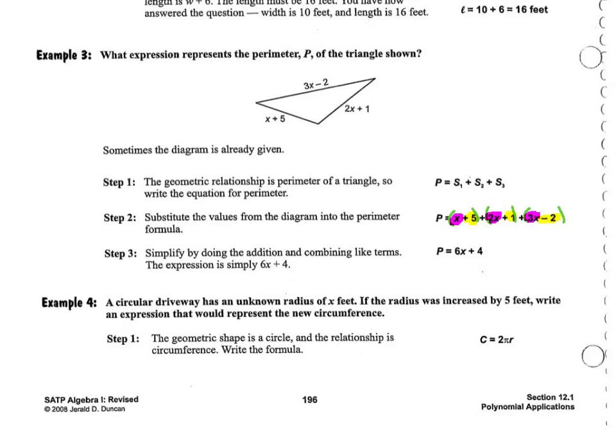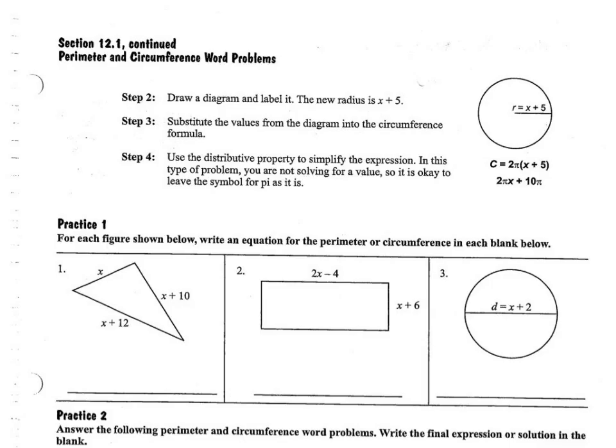And finally I am going to give you an example with a circle. A circular driveway has an unknown radius of x feet. If the radius was increased by 5 feet, write an expression that would represent the new circumference. So over here I give you the general rule for the circumference of a circle. And I know that the radius is being increased by 5. So my radius will call it x and it is being increased by 5. So it is x plus 5. So in this case, instead of 2 pi r, it is going to be 2 pi times x plus 5. Because this here is our radius.